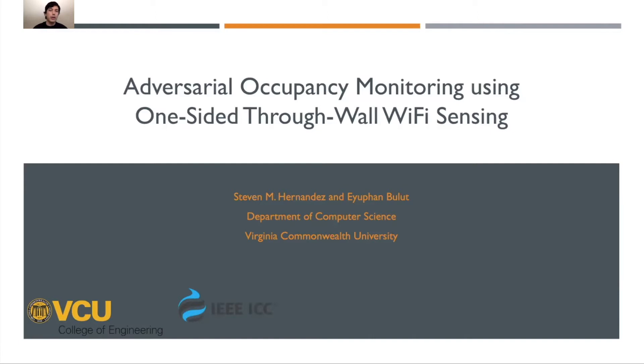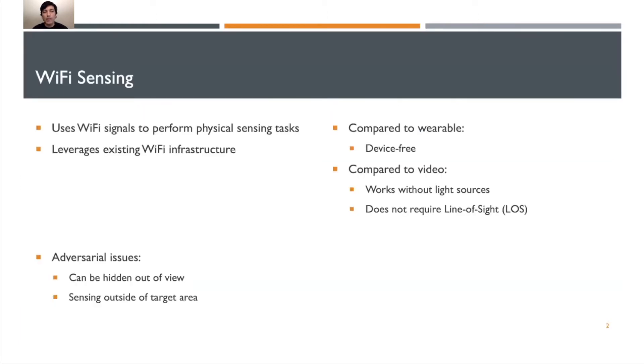Let's start our discussion with Wi-Fi sensing. Wi-Fi sensing uses Wi-Fi signals to perform physical sensing tasks. The idea is the signals that we receive are affected by physical attributes of the environment, such as furniture placement and size of the room.